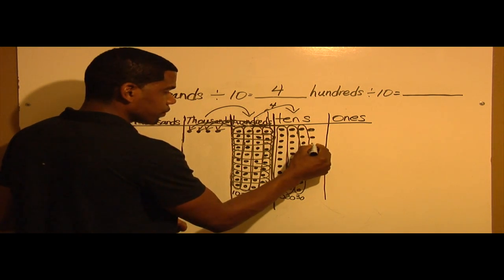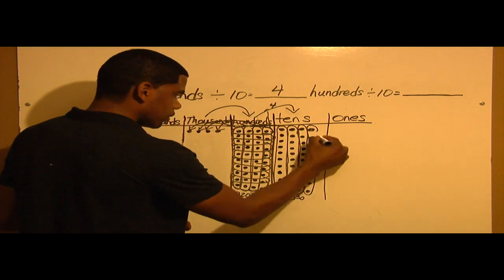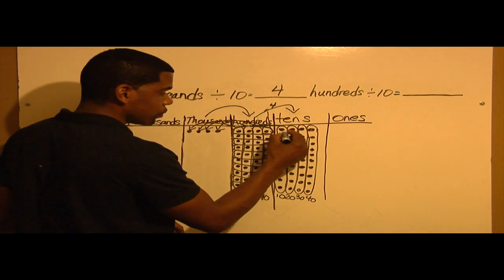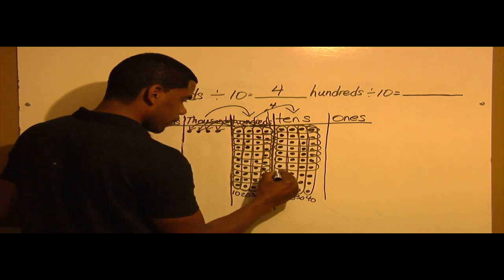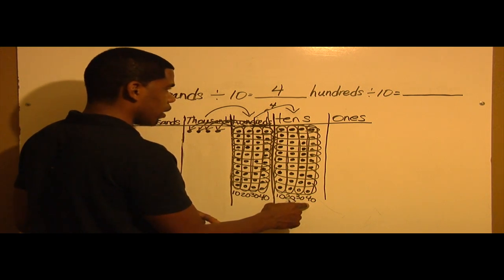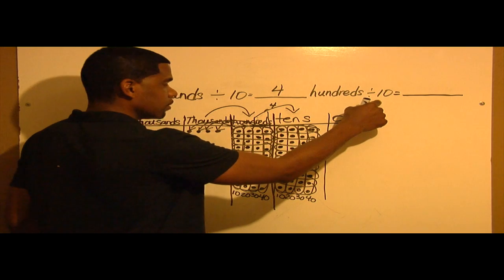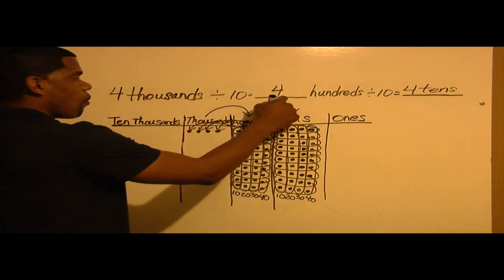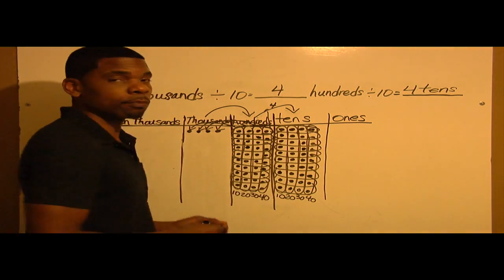Last group, we add 10 again: 1, 2, 3, 4, 5, 6, 7, 8, 9, 10. This represents 40 tens, which is 400. To represent this into smaller units, we're going to bundle straight across: 1, 2, 3, 4, 5, 6, 7, 8, 9, 10 — so we have 10 bundles of 4. If we unbundle this, we have 40 tens which is 400. So 4 hundreds divided by 10 is 4 tens. Therefore, 4,000 divided by 10 is 4 hundreds, and 4 hundreds divided by 10 is equal to 4 tens. Thank you.